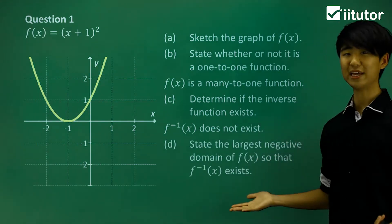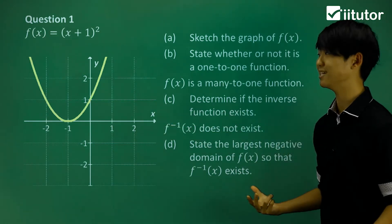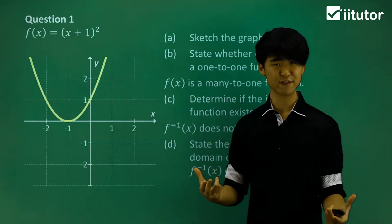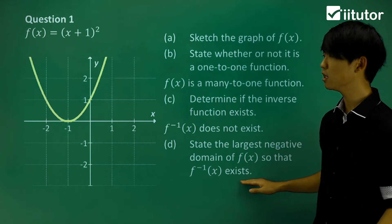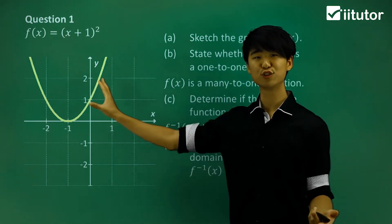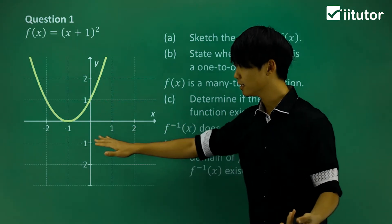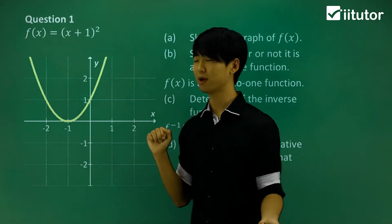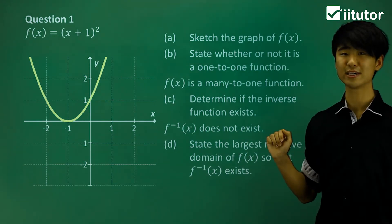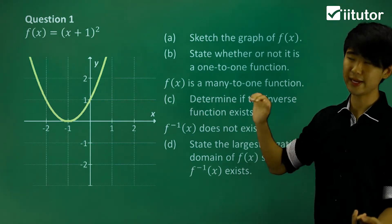In part d, it asks me to state the largest negative domain of the function so that the inverse function does exist. Because this is a many-to-one function, the inverse doesn't currently exist. However, we can restrict its domain and take only part of the graph to make the function have an inverse. Currently it doesn't work because it's many-to-one — one y value corresponds to two x values, and reflecting over y = x won't work. So we want to restrict the domain to make it one-to-one.